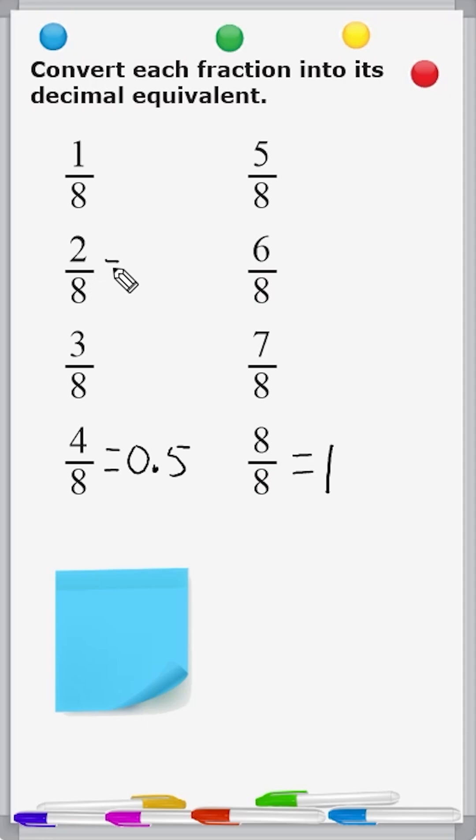2 out of 8 can be reduced to 1 fourth, and 1 fourth is equal to 1 quarter, or 0.25.